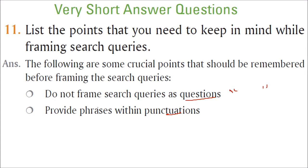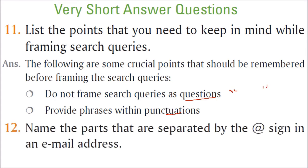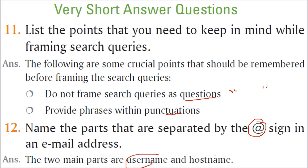Name the parts that are separated by at the rate sign in an email address. First part is username, after that we have at the rate, and then we have the hostname. The username and the host, you can also say the email domain.